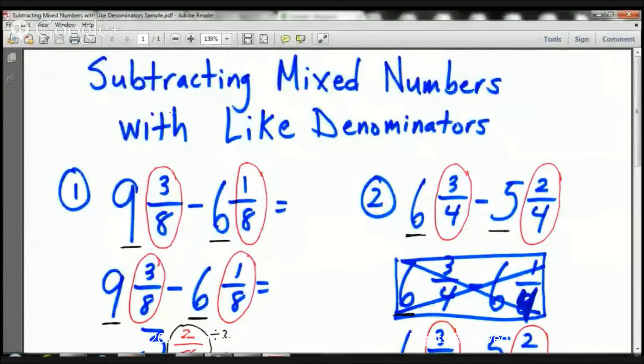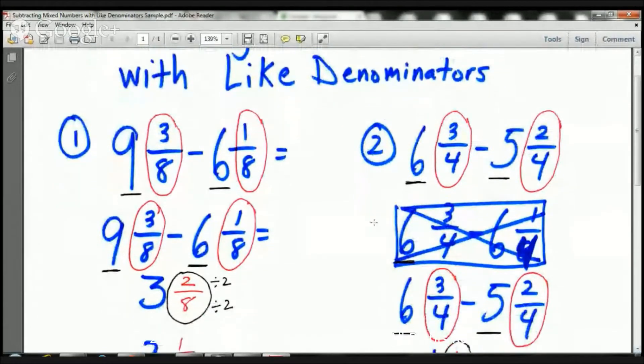And what we're doing today is we're subtracting mixed numbers with like denominators. And as you can see here, when I was working out the math, I made a mistake. I wrote down the wrong problem, so I crossed that out. So ignore that, okay? So let's go ahead and let's get started with our first example.